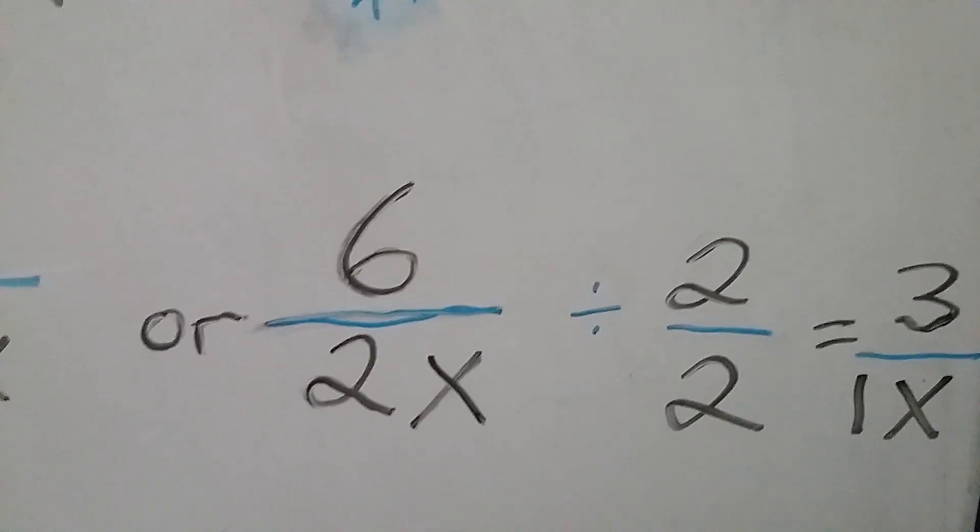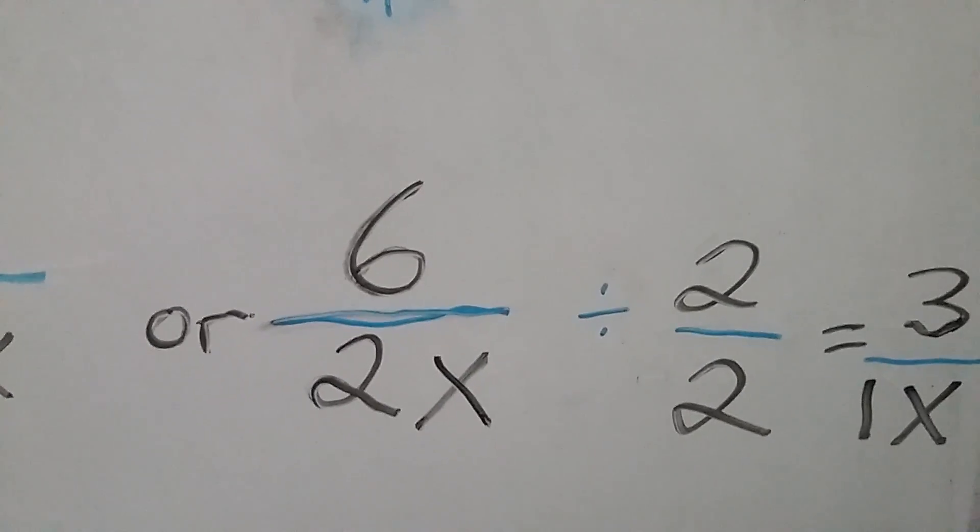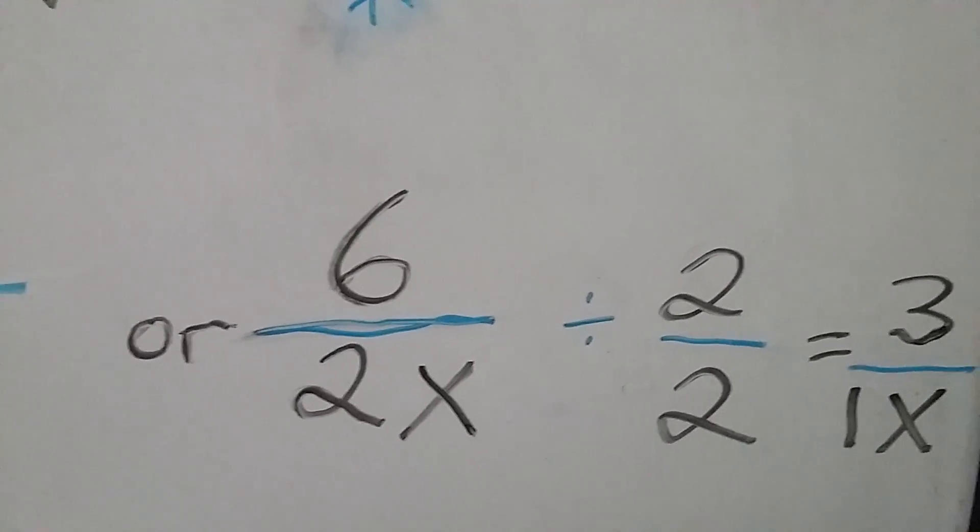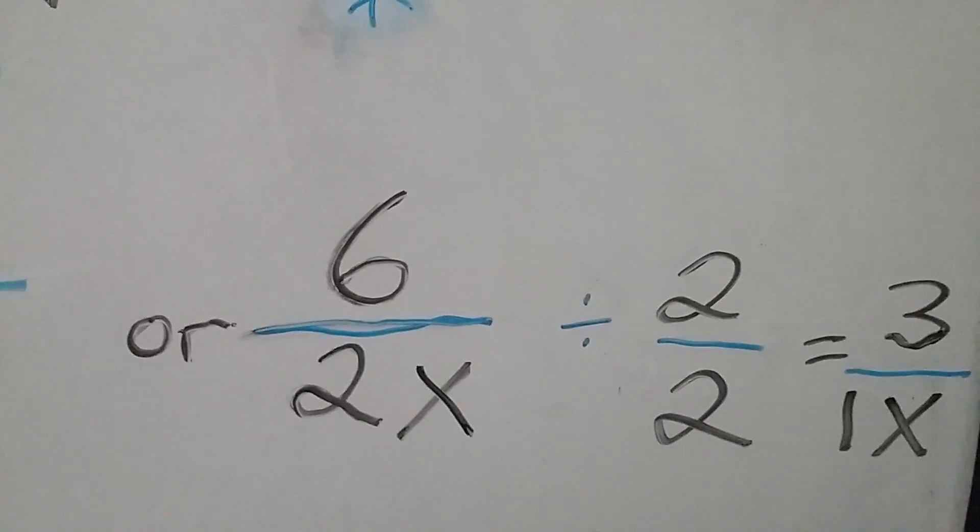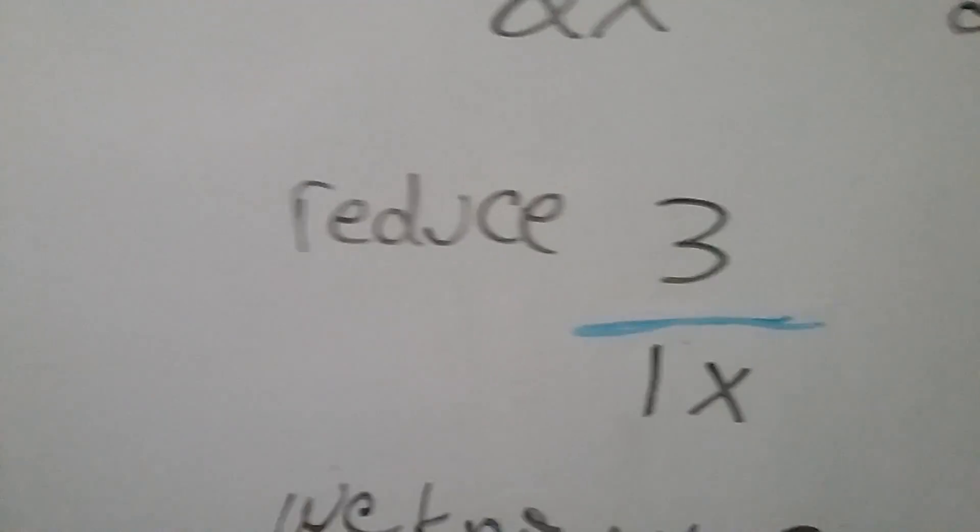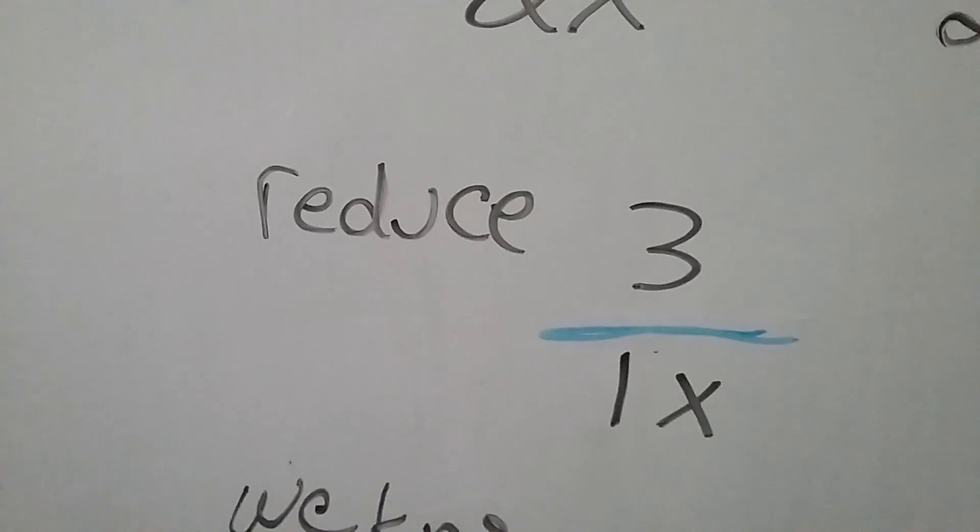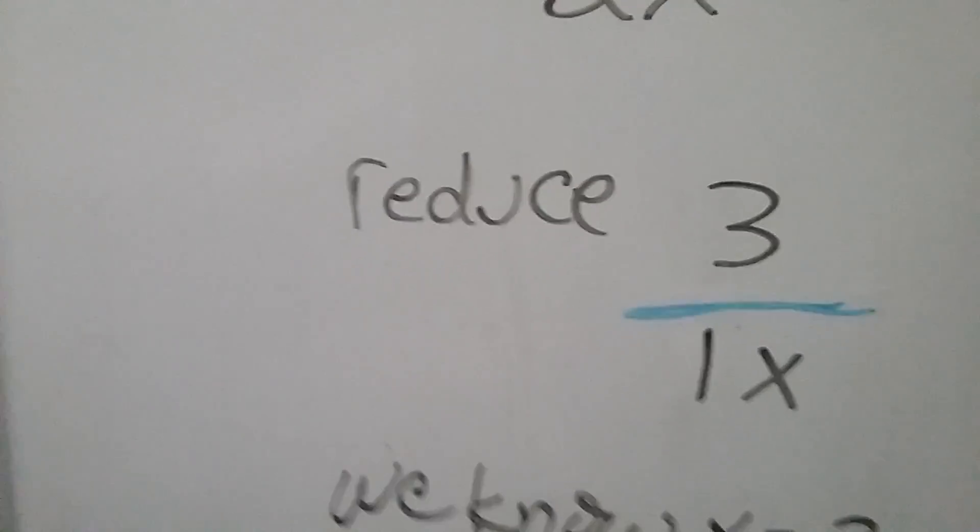Because if you just think I have 2 of something, and I divide it in half, now I have 1 of it. So 2x divided by 2 is 1x. So now we have 3 over 1x. Now we go down here. The next thing we can do that we have reduced it to 3 over 1x.